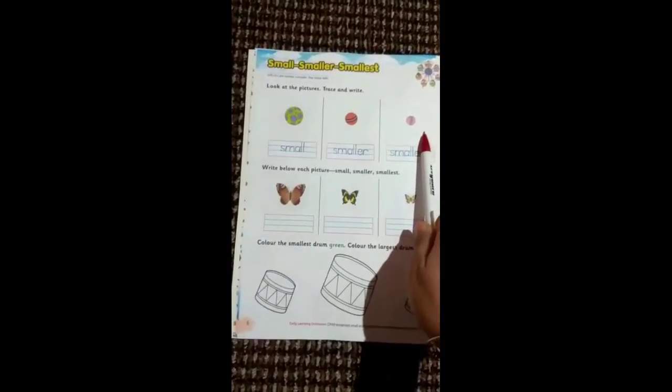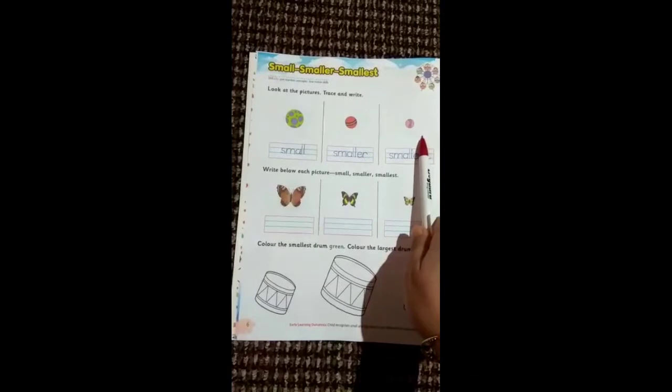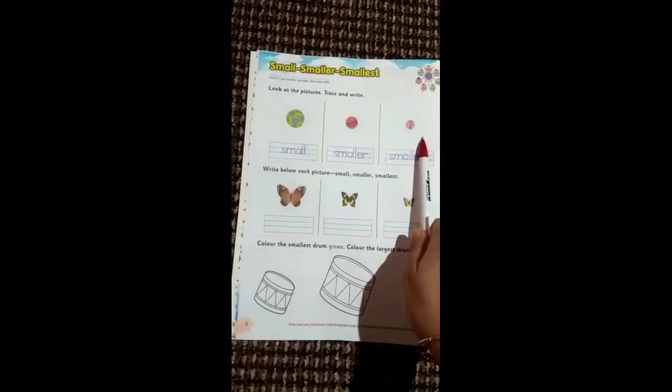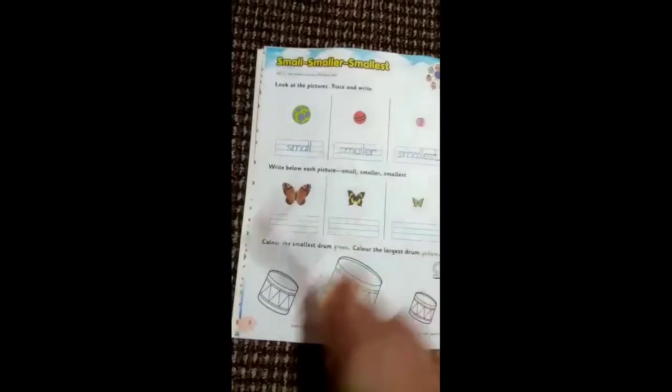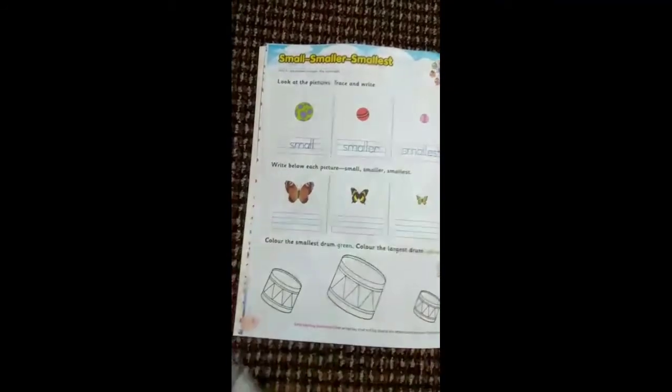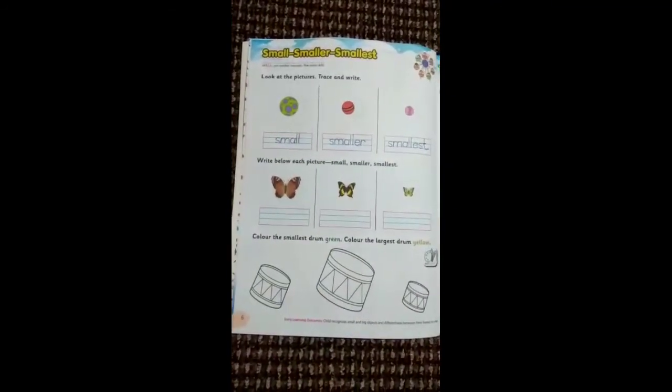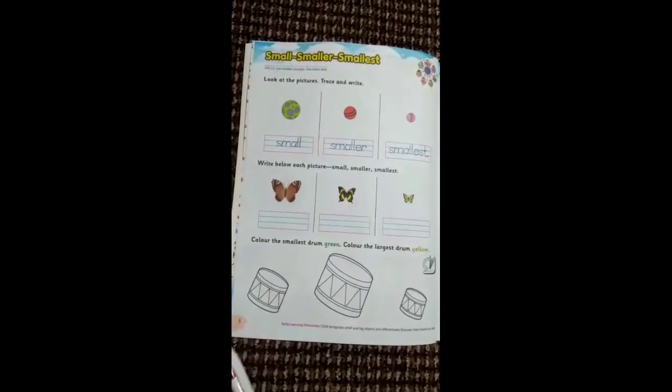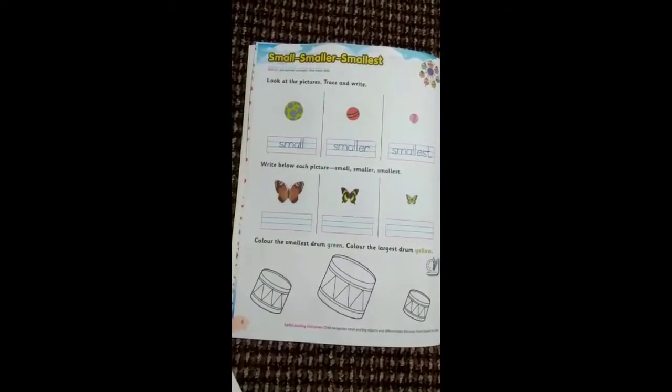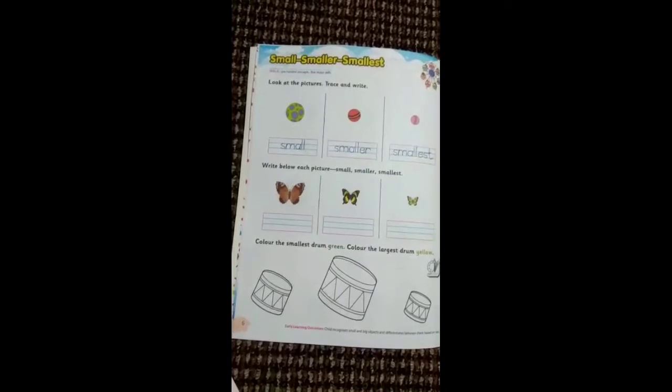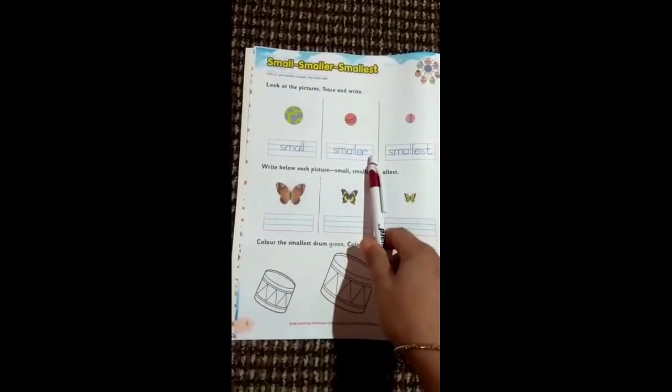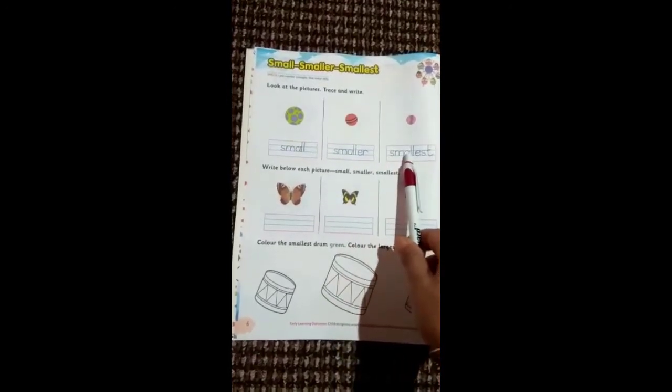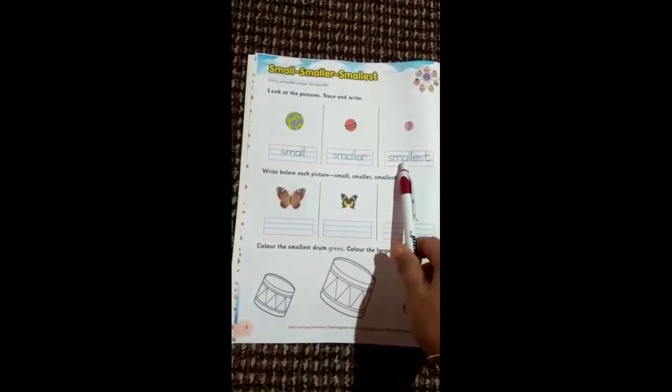The object which is at the rightmost has smallest size. Now the first object is captioned with the term small, second object is captioned with the term smaller, and the third one is captioned with the smallest.